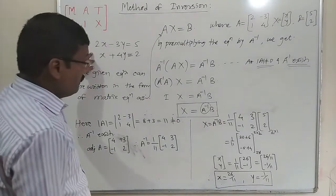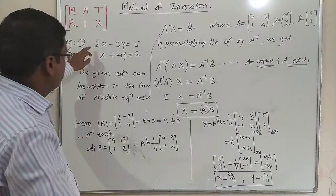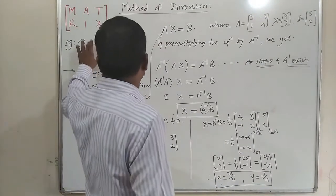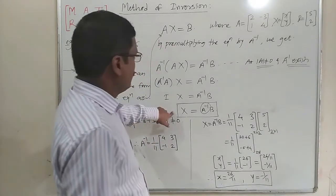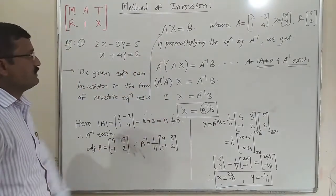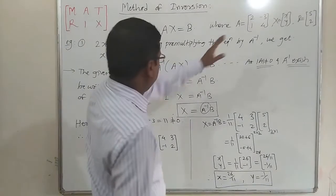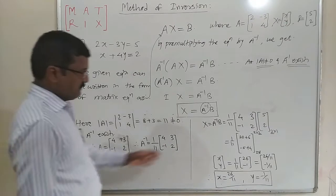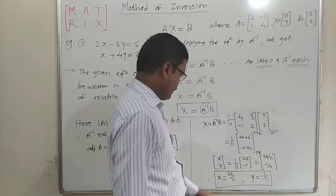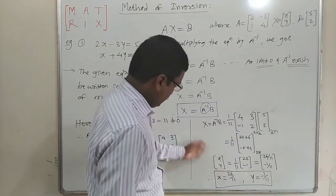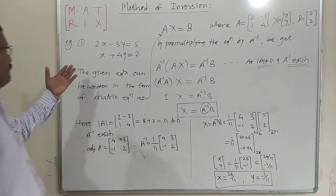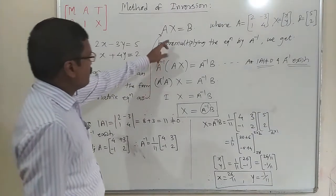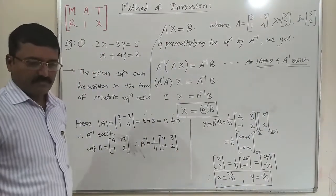This type of question will be asked for three marks, as it requires converting the given equations into a matrix equation (one mark), finding the inverse of the matrix (one mark), and the final multiplication to get the answer (one mark). Sometimes it will be asked for four marks. This method is very simple if you remember the process.